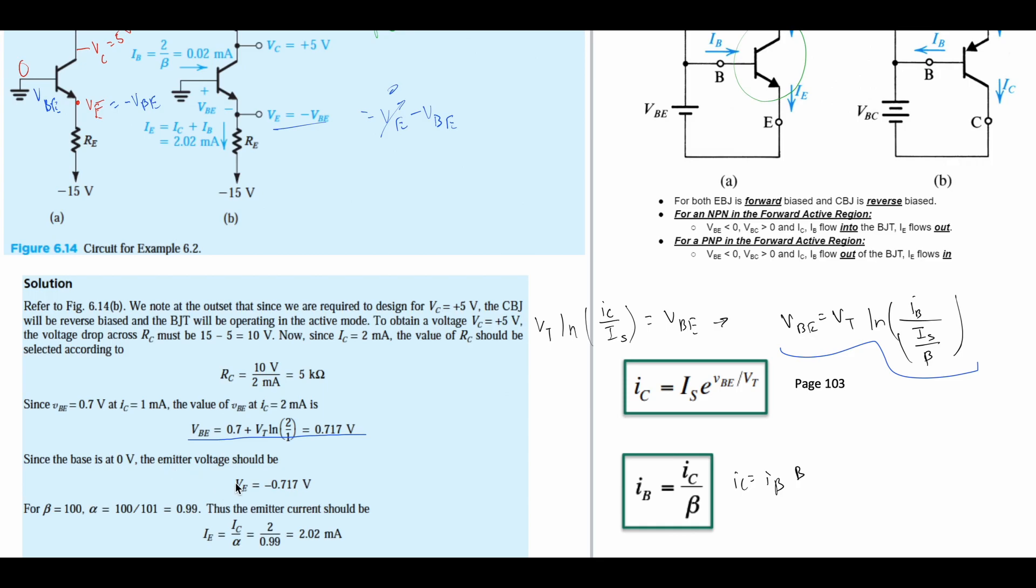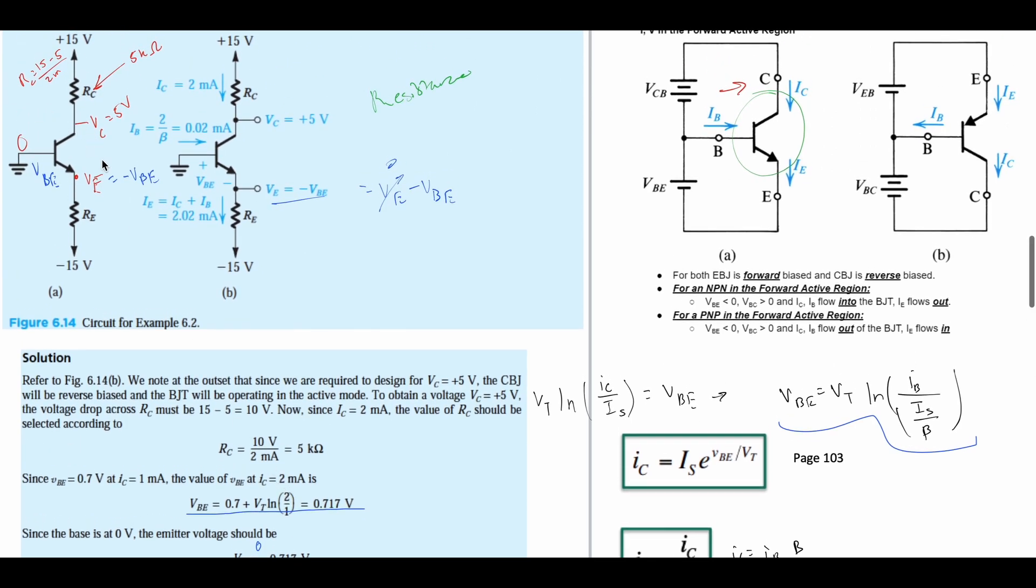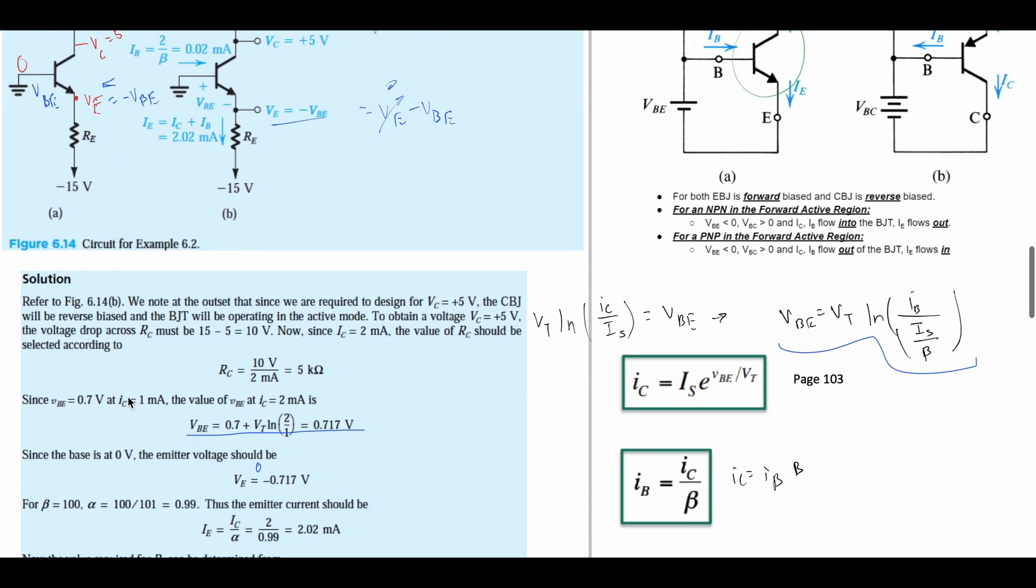Since the base is zero, the emitter voltage should be this value—0 minus 0.717 volts—so that is going to be the VE. Now we can keep going.